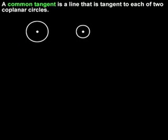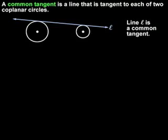A common tangent is a line that is tangent to each of two coplanar circles. For example, in the diagram shown, line L is a common tangent.